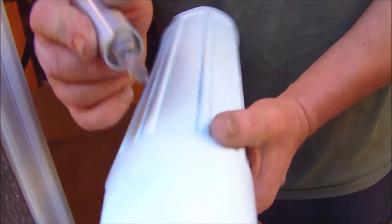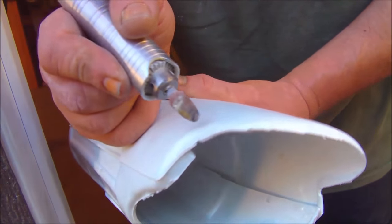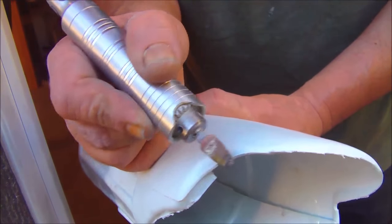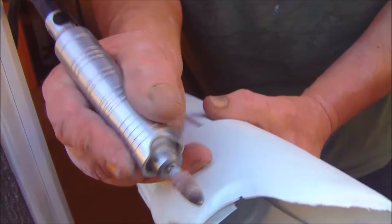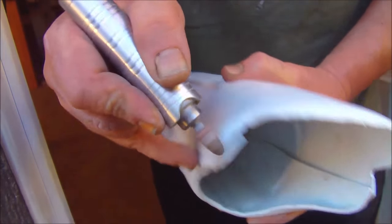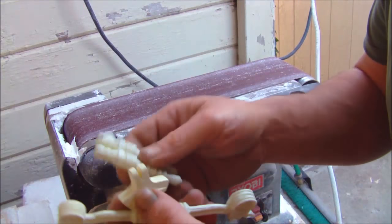There's a few areas that you can't get on the belt sander, so we're going to go ahead and use a Dremel just to sculpt away some of this excess flashing right here.